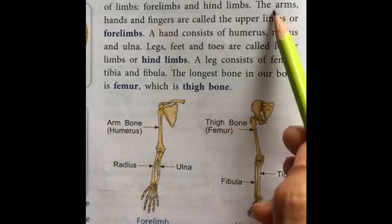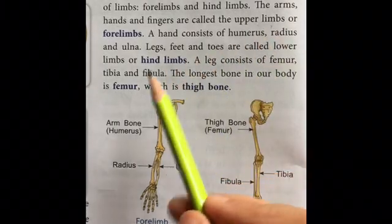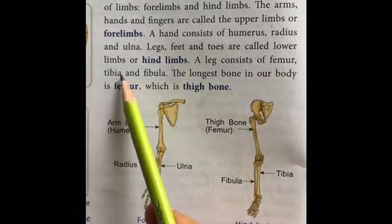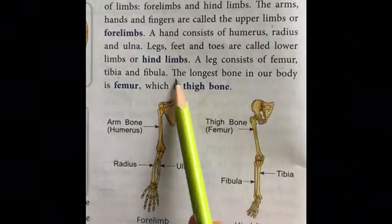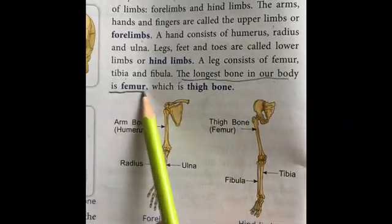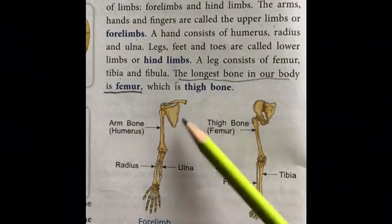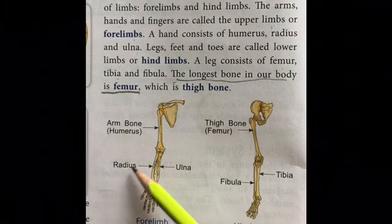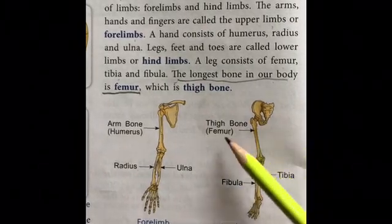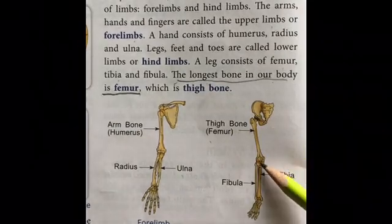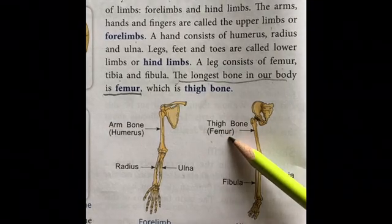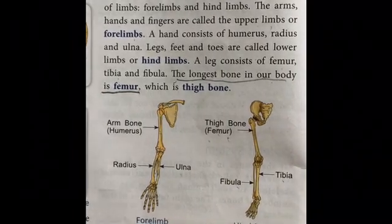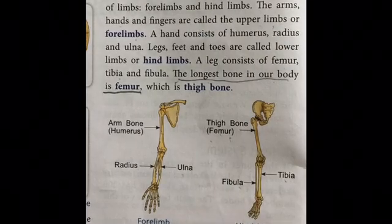The arm, hand, and fingers are called upper limbs or forelimbs. A leg consists of the femur, tibia, and fibula. The femur — the thigh bone — is the longest bone in our body. The arm bone is called the humerus; below that are the radius and ulna. The thigh bone is the femur, and below it are the fibula and tibia. The forelimbs are the arms and the hind limbs are the feet.